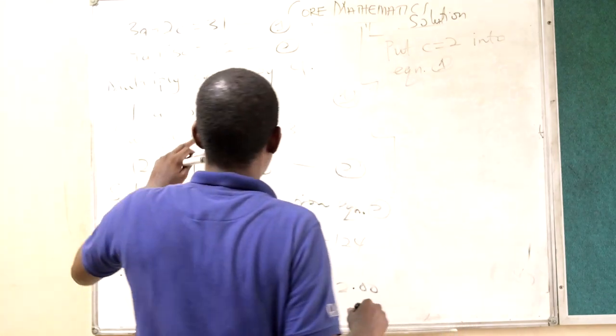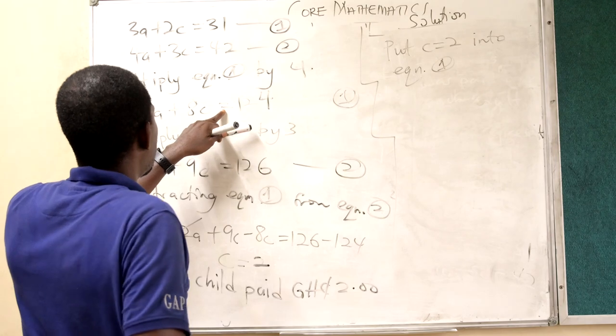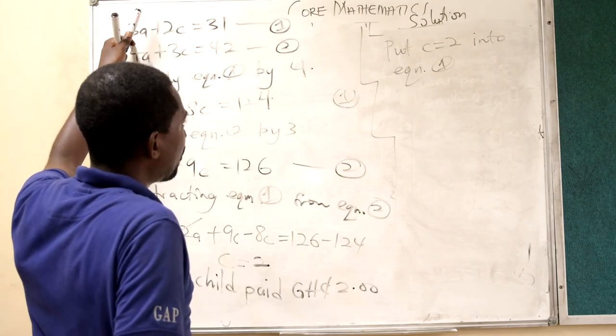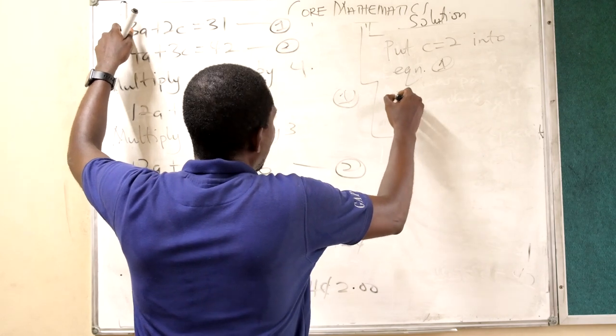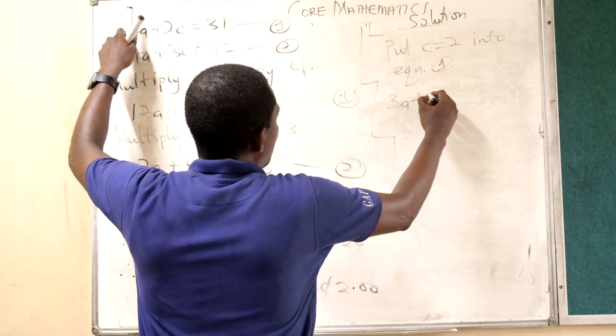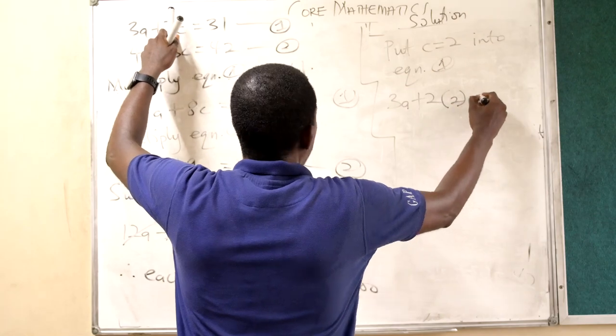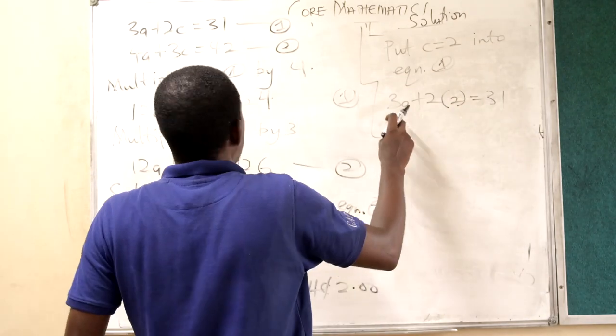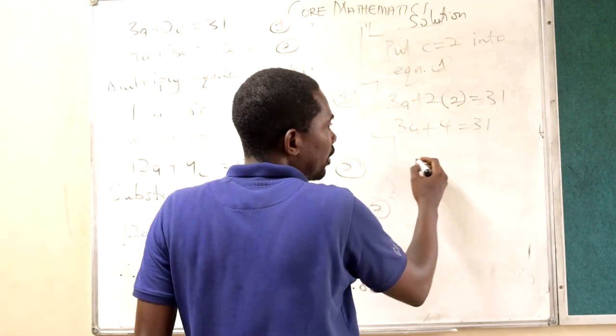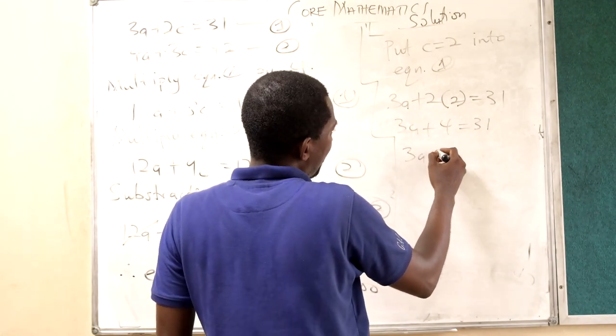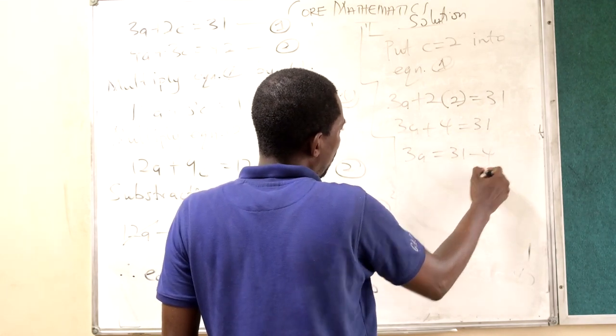And I am using this one. I can also use this one. I know it will work for me. Alright, so I have 3A plus 2C and our C is 2. Is equal to 31. 3A plus 4 is equal to 31. 3A is equal to 31 minus 4.